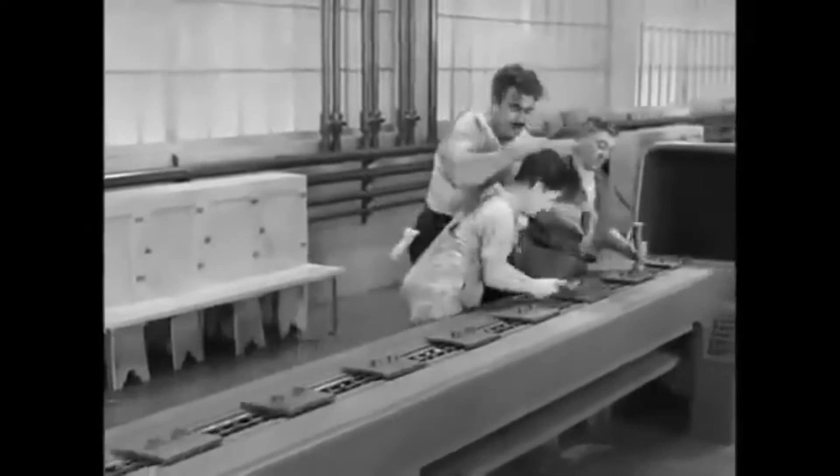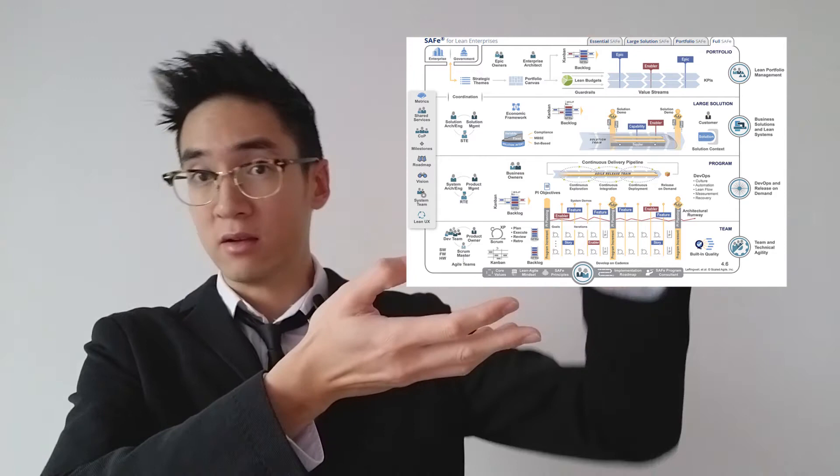The fourth mistake is reproducing the bureaucracy of the waterfall method over collaboration. In the SAFe picture, you have different levels and different layers, and for sure there may be some bureaucracy — that's normal. But try to privilege collaboration over bureaucracy. Foster collaboration between the portfolio, the large solution, and the program level through meetings or workshops. Don't just apply bureaucracy, because Agile is about collaboration, after all.